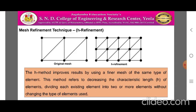The H refinement method is shown in the figure. The H method improves the result by using a finer mesh of the same type of element. This method refers to decreasing the characteristic length (edge) of elements, dividing each existing element into two or more elements without changing the type of elements used. More accurate information is obtained by increasing the number of elements. The name for the H method is borrowed from mathematics, where the variable H is used to specify the step size in a numeric integration. If a part is modeled with a very coarse mesh, the stress distribution across the part will be very inaccurate. In order to increase the accuracy of the solution, more elements must be added, meaning creating a finer mesh.